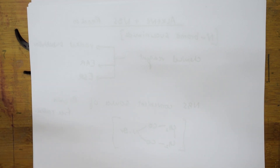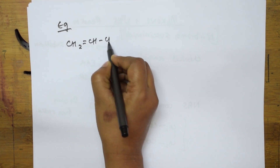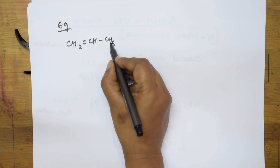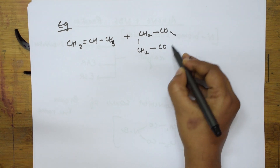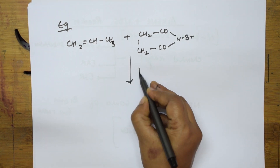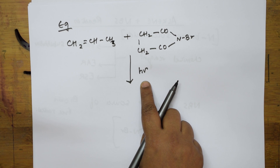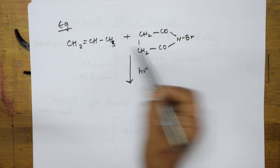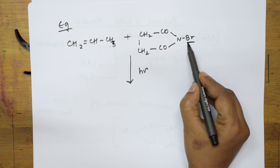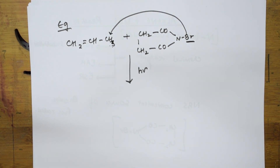Let me take an example to understand how NBS reacts. I am going to take an unsymmetrical alkene: CH3-CH=CH2. Now I am going to add NBS — formula CH2-CO-CO-N-Br — and this whole reaction occurs in the presence of hν (light). NBS is a source of bromine free radical, and this bromine goes and attacks the allylic hydrogen — the hydrogen on the allylic carbon adjacent to the double bond.